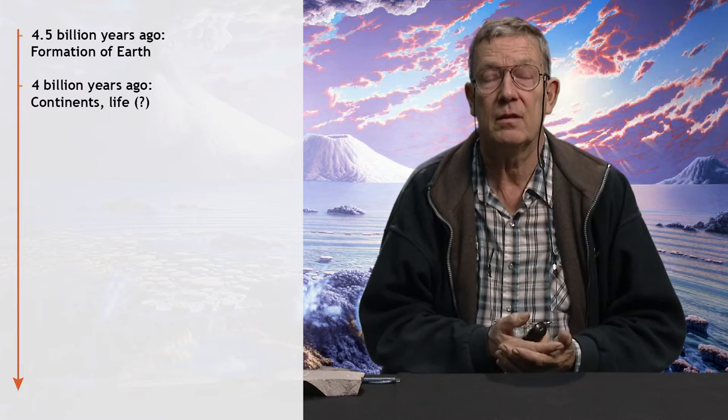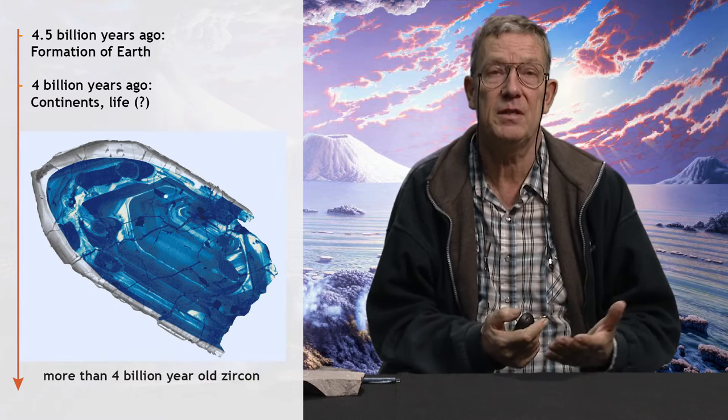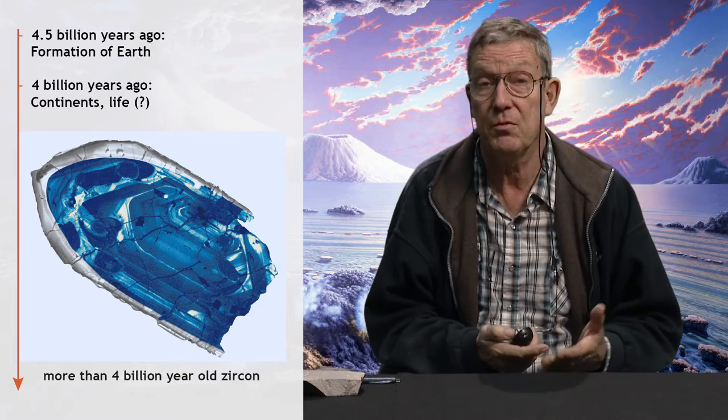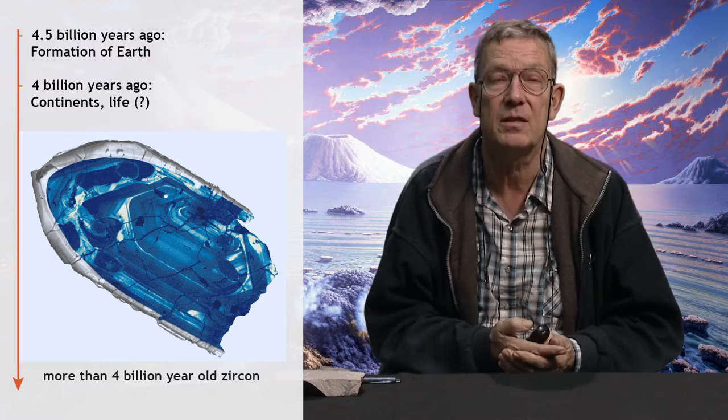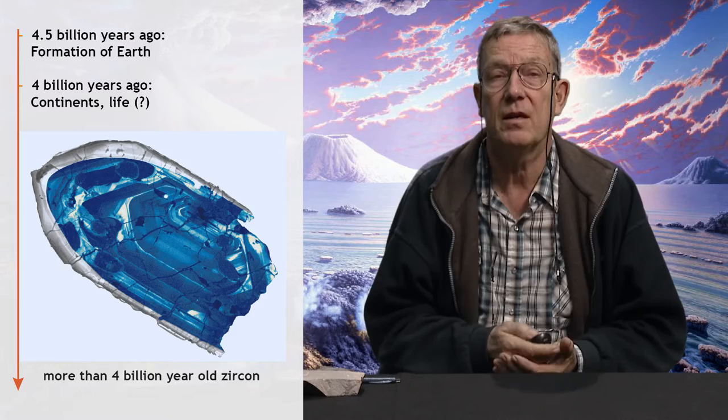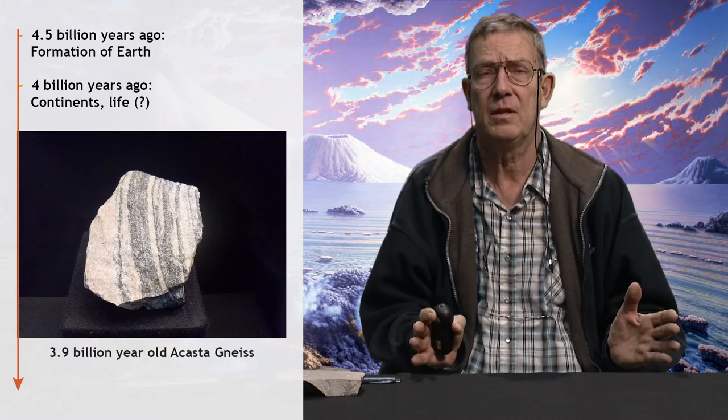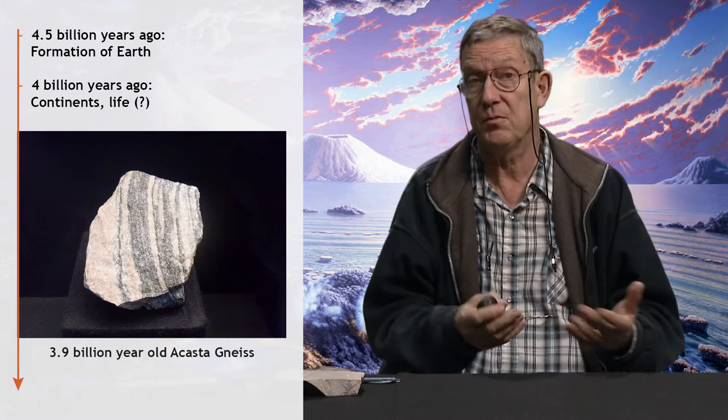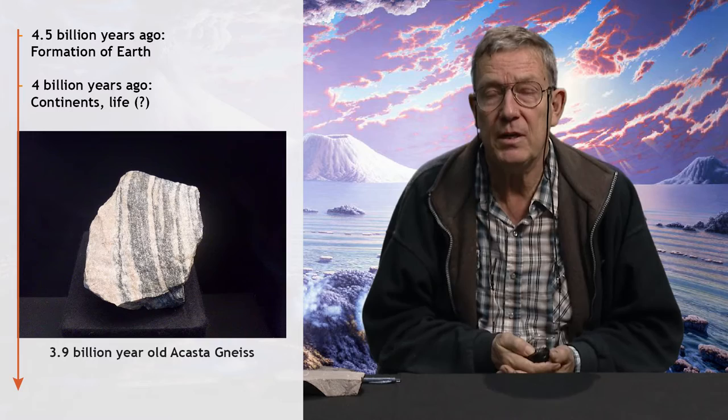The oldest minerals on the Earth are tiny zircons. They're very resistant against resorption in the crust of the Earth. But you can date them, so we know they're 4.2 billion years old. They're inherited from a former rock — placed into a new rock. Rock types like this in Canada are 3.9 billion years old, but totally metamorphosed. Every evidence for the development of the planet hidden in there is, apart from some geochemical clues, totally wiped out.